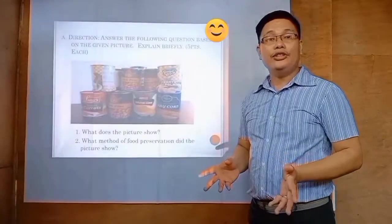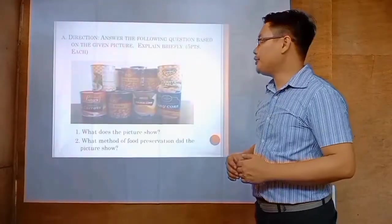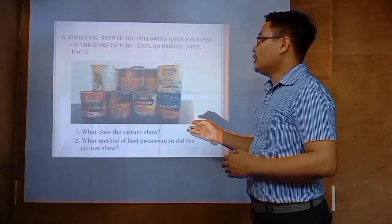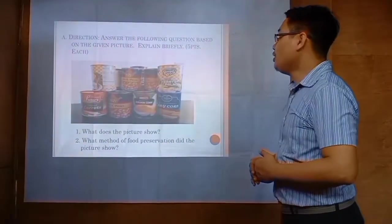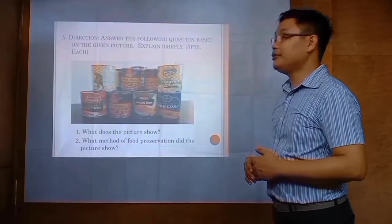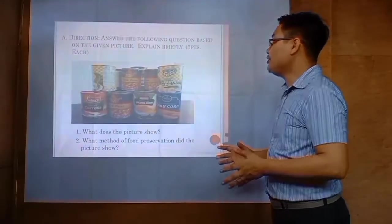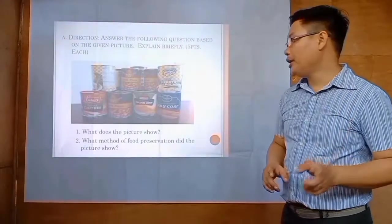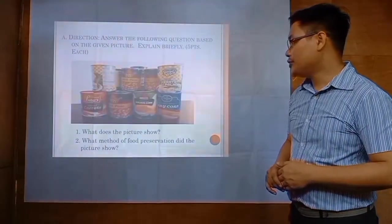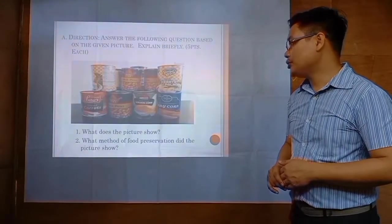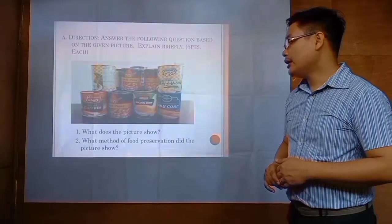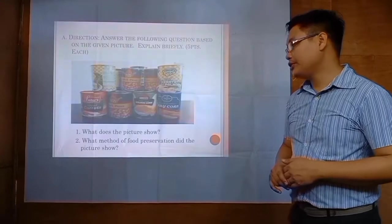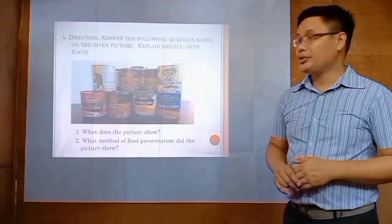Now let's move on to our assessment. The direction: answer the following questions based on the given picture, explain briefly, five points each, for your one whole sheet of paper. First question: what does the picture show? And the second: what methods of food preservation did the picture show? Fill in the blanks with the correct answer, choose the correct answer inside the box.